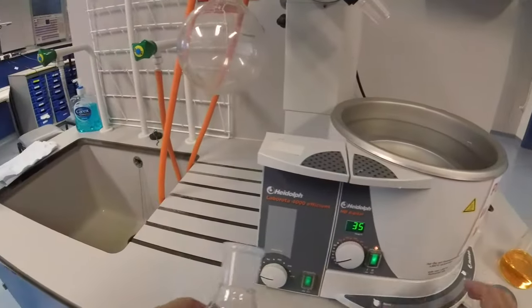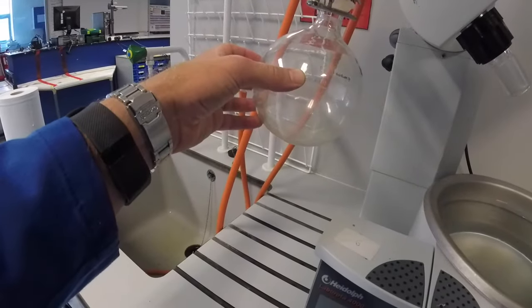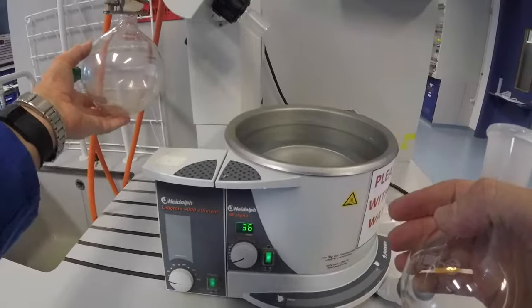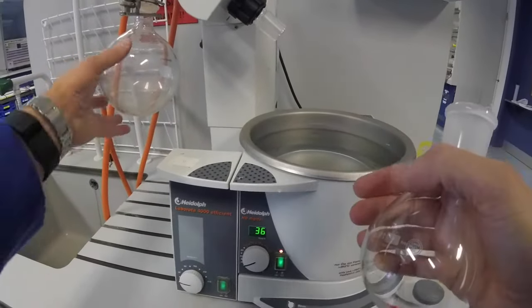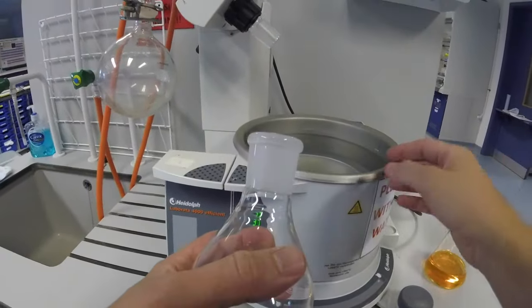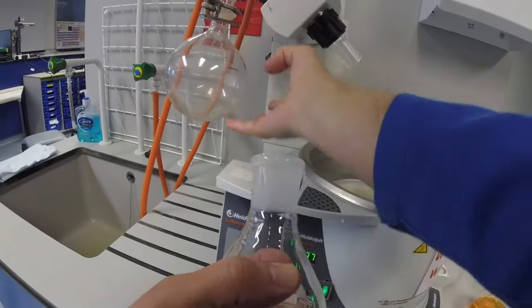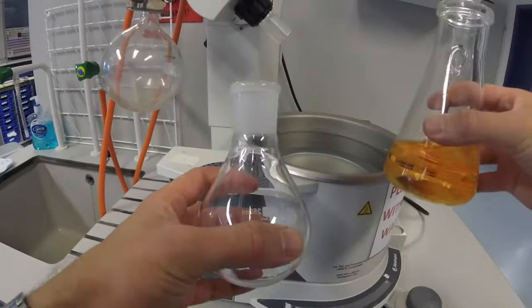You do want to make sure that the receiver flask is empty. It should have been emptied by the last person but just check that because the last thing you want is if your compound accidentally bumps and is pulled up over into this flask, you don't want to be contaminated with anything anyone else has been using.